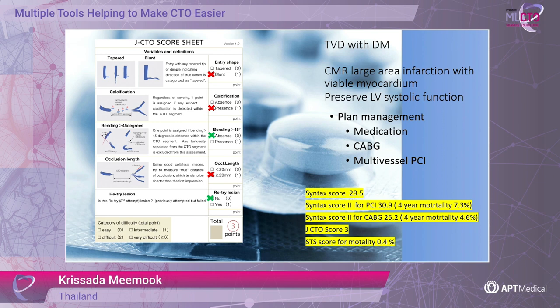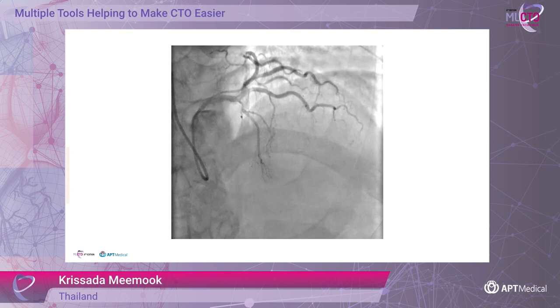We talked with the patient about which management option should be chosen: medication, bypass surgery, or PCI. Because the patient has had multiple episodes of stroke, he did not want to go for bypass surgery and asked us to perform PCI. When we analyzed the angiogram carefully — can you guess which one is the ostio-proximal cap of the CTO?